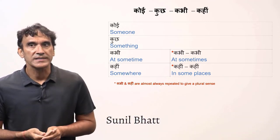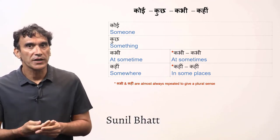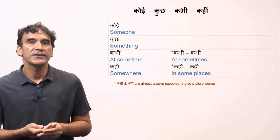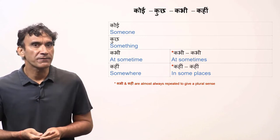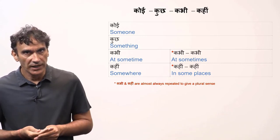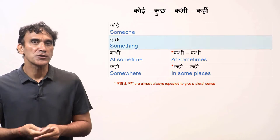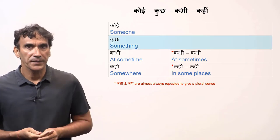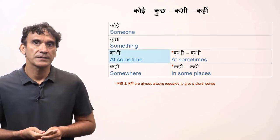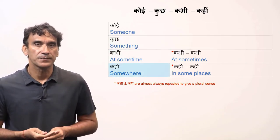The next grammar point is the usage of Koi, Kuch, Kabhi, and Kahin. In Hindi, there are many important phrases made with these words. Koi means someone, Kuch means something, Kabhi means at some time, and Kahin means somewhere.